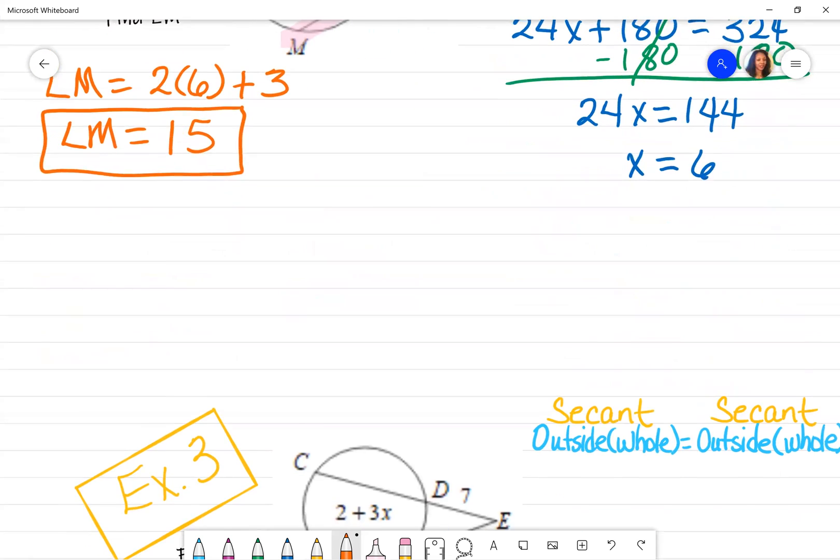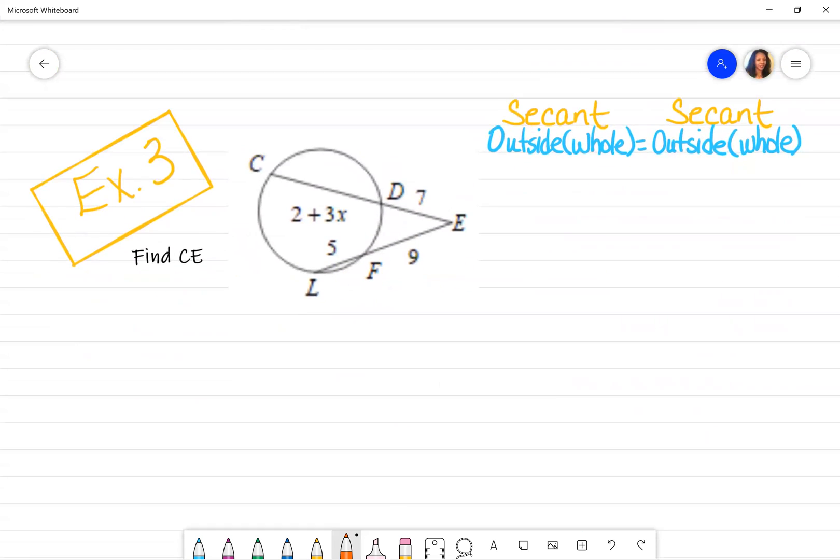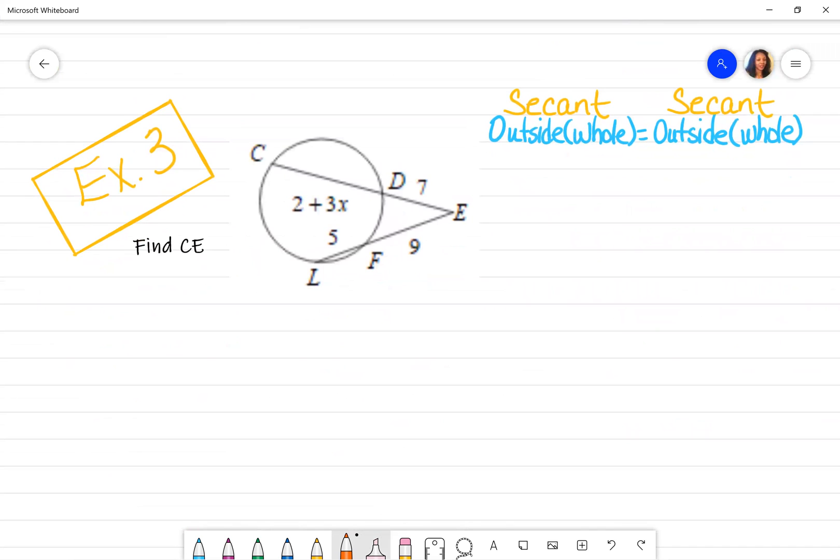And then finally, for example three, we have another situation, but this time is two secants. And again, you can barely see it, but that one actually goes through the circle. Don't get it confused with the tangent. It looks similar to a tangent, but it's not. And that one goes through the circle. It does not matter which one you start with. I'm going to go ahead and start with the top. The top says the outside is 7. So that's what we're going to write. 7 times the whole.